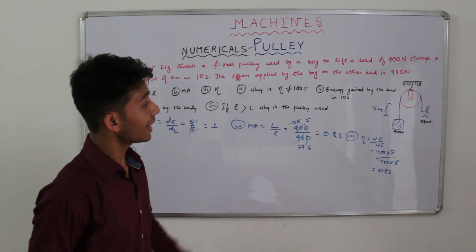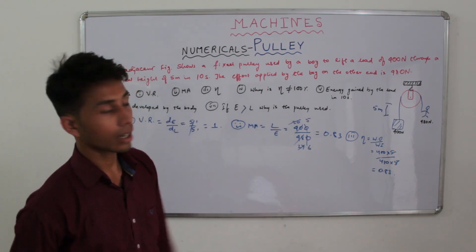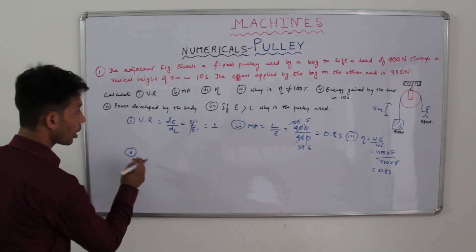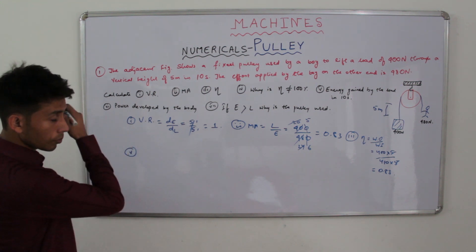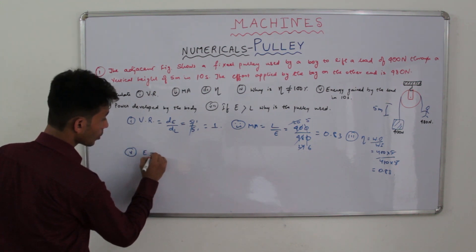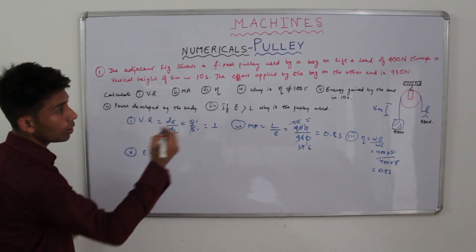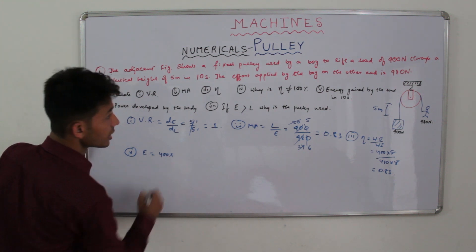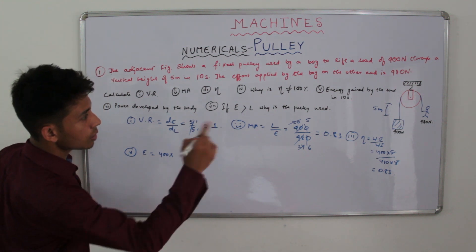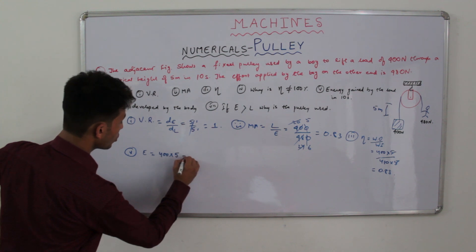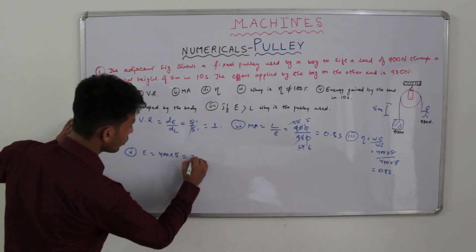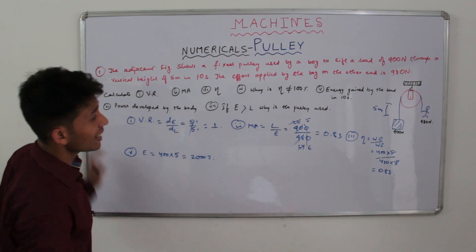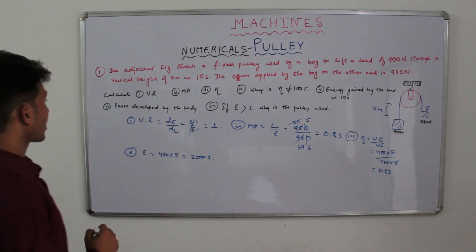The fifth part is energy gained by the load in 10 seconds. Energy gained equals work, which equals load value 400 Newton into displacement 5 meters. So 400 into 5 equals 2000 Joules. This is the energy gained by the load in 10 seconds.